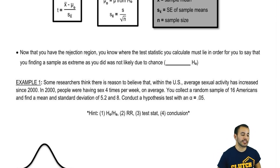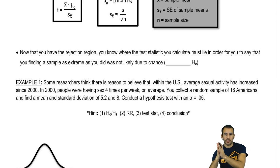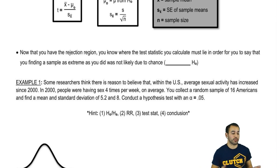So now that you have the rejection region, you know the test statistic you calculate must lie in order for you to say that you finding a sample as extreme as you did is not likely due to chance. This sample is so far off that it's not likely that maybe it was a little below, maybe it was a little above and that just happens naturally. Yeah, that's true, but at a certain point it's not that natural. So after you get to this critical value and you pass it, it's not really likely that that should have happened if I got a sample this size.